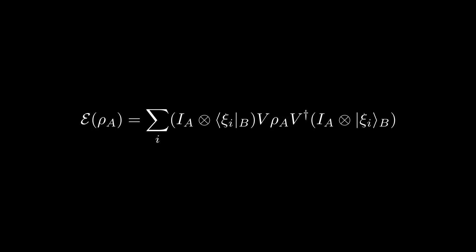For the Krauss operator interpretation of the quantum channel, let's start with the isometric definition. Using the definition of partial trace, we can expand out this expression as follows, where the ξ_i kets form an orthonormal basis for the Hilbert space of B. We can then define the action of this identity tensor bra operator on V as an operator M sub i.